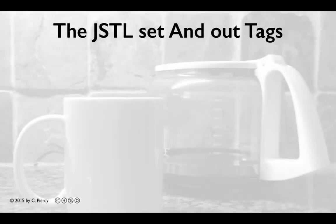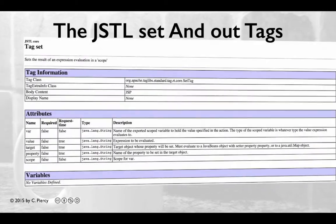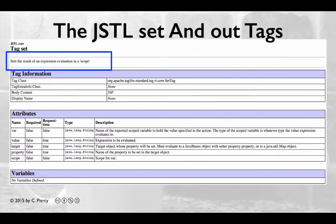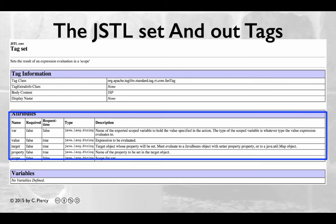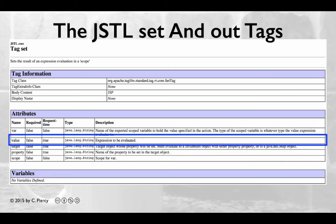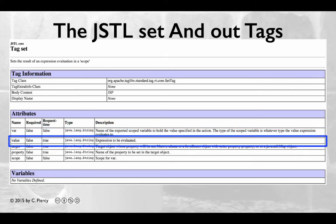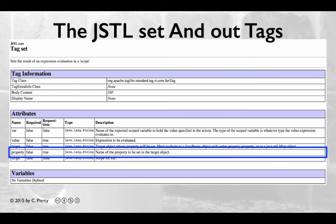The JSTL set and out tags are complements of each other. The core JSTL set tag is used to assign a value to an object or a variable. In addition, with this tag you can specify the scope of the variable. Note that the JSTL set tag has five attributes. We will generally need to include the var and the value to use this well. Using a target, property, and scope are generally optional.